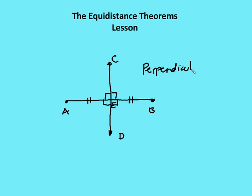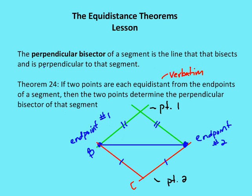So there are two components to the perpendicular bisector. One is that the bisector, or the line, forms a right angle with the segment. And the second is that it bisects the segment, or splits it into two pieces.